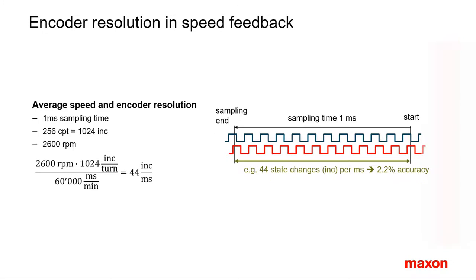In the speed controller, velocity evaluation is usually done by counting the number of states per cycle time. At a reasonably high speed, there are many states per cycle time. A typical example could be motor speed 2600 rpm, encoder resolution 256 counts per turn, which corresponds to 1024 states per turn, and a controller sampling time of one millisecond.